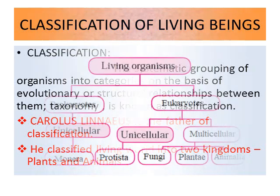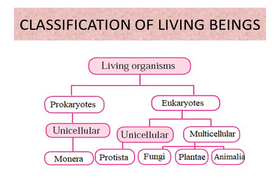Here we can see a chart describing the categories of classification. Living organisms are divided into two super kingdoms: prokaryotes and eukaryotes. Prokaryotes are directly classified as unicellular, belonging to the kingdom Monera. Eukaryotes are divided into four kingdoms: Protista, Fungi, Plantae, and Animalia, and can be both unicellular or multicellular.